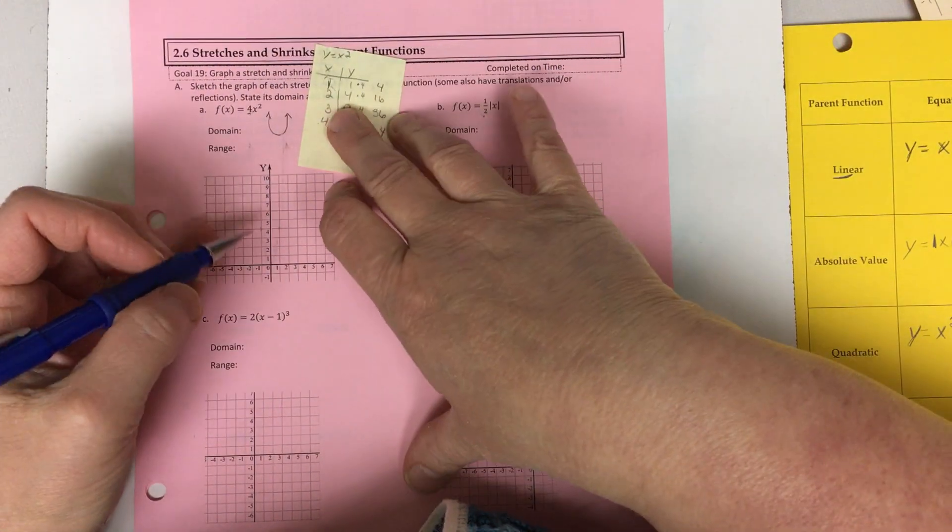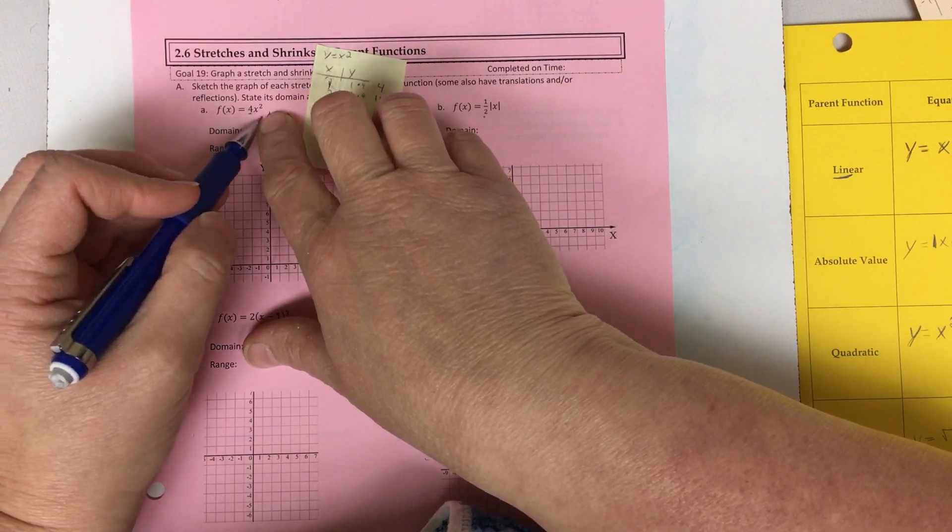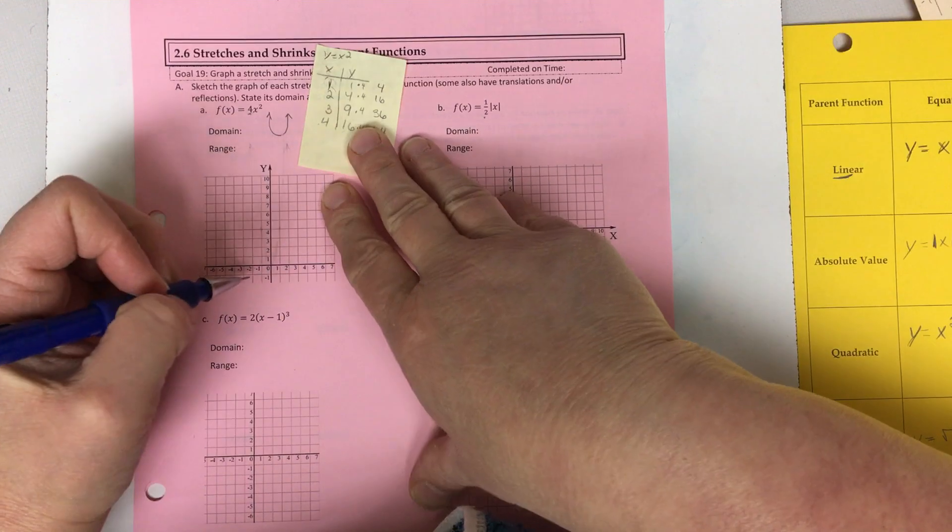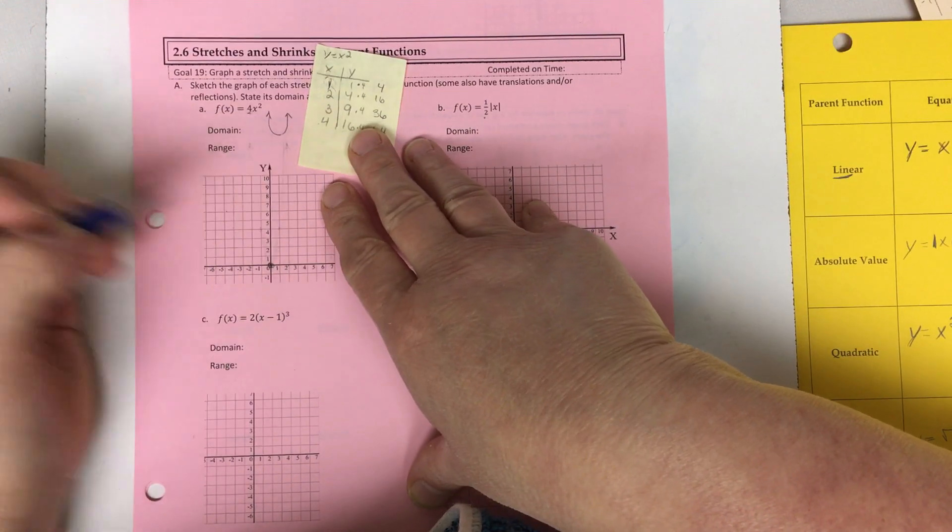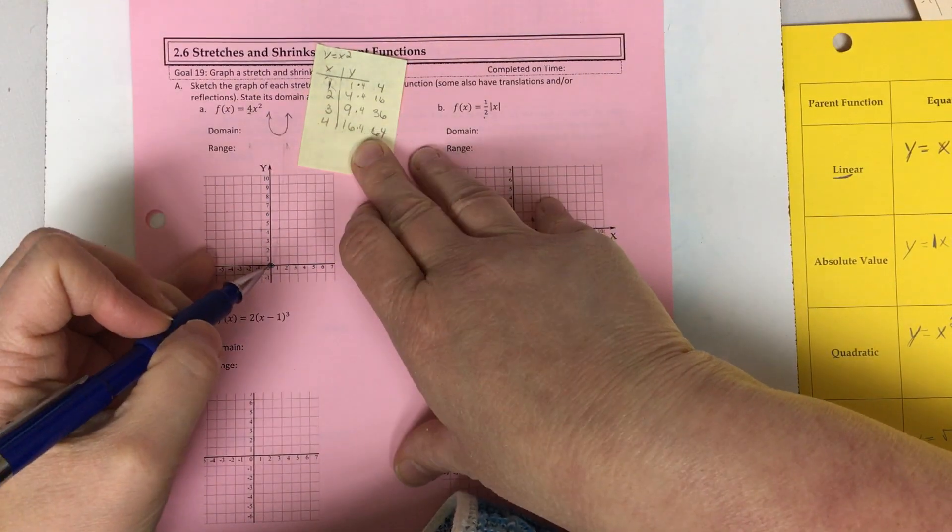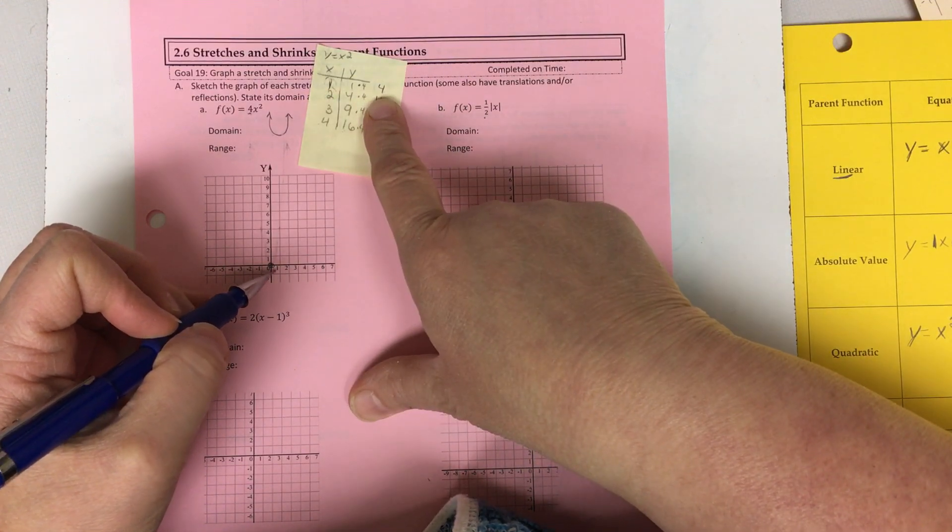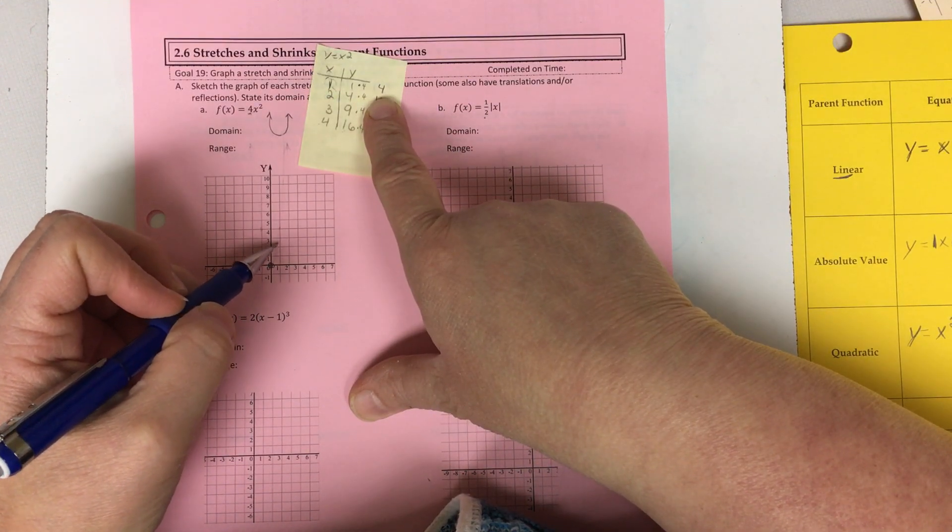So I know that I'm not shifting left or right or up or down because I don't have any of that in place with this equation. So my starting point is at zero zero. So I always start from here, over one, up four. Over one, up four. One, two, three, four.